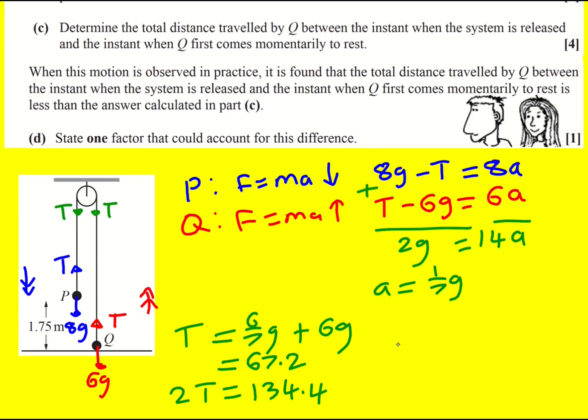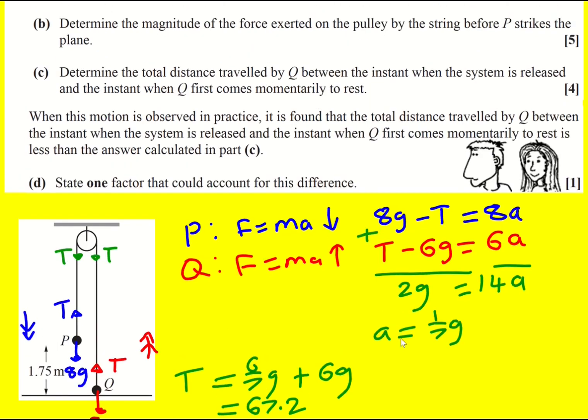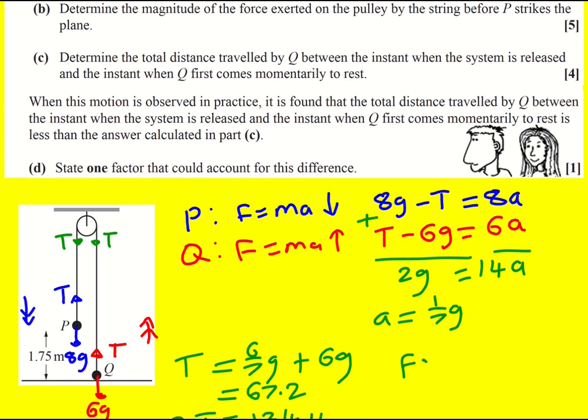134.4. So I'm going to round that to three significant figures. Just going to say, force exerted on pulley by string equals 134 Newtons. Nice. Onwards.